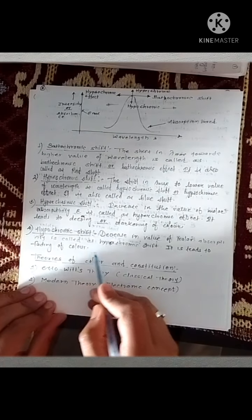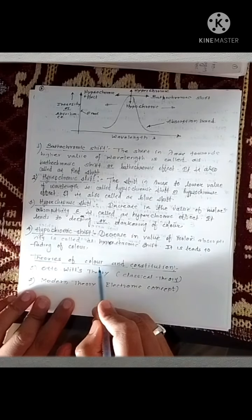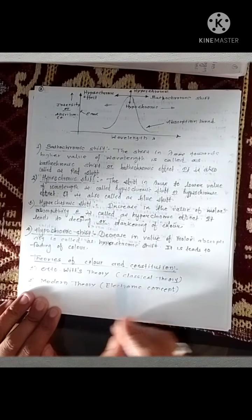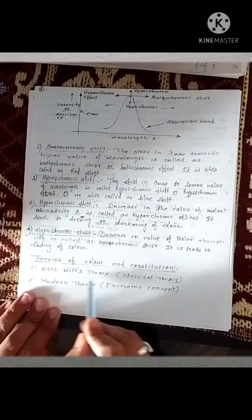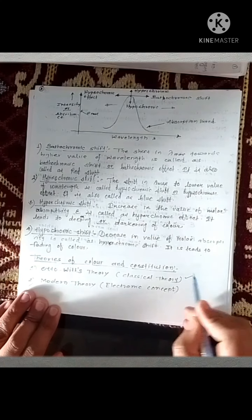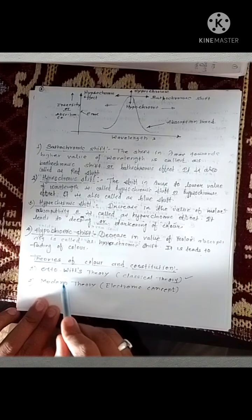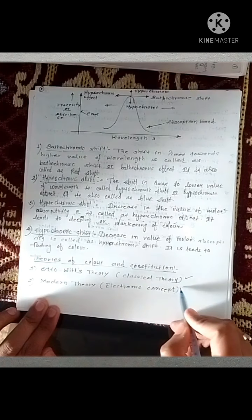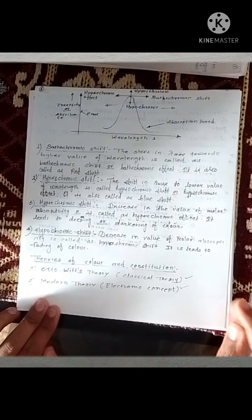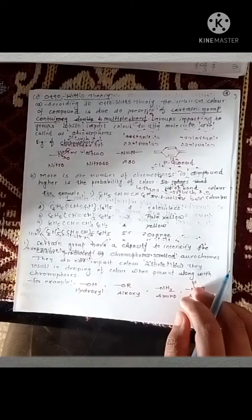There are basically two theories of color and constitution. The first theory is known as Witt's theory — it is also a classical approach to color and constitution. The second theory is known as the modern theory — it is the electronic concept of color and constitution. We are going to see both theories one by one.